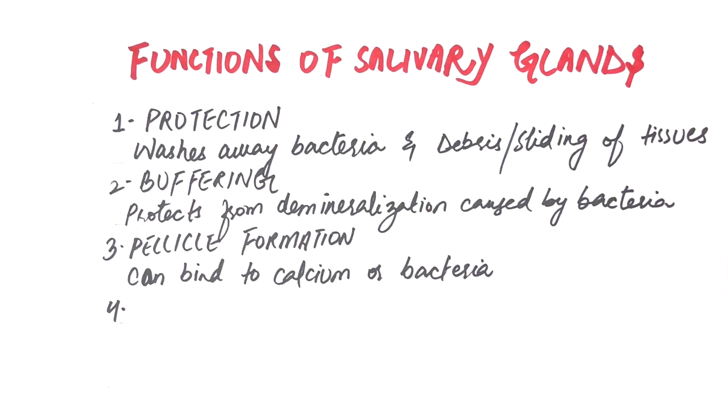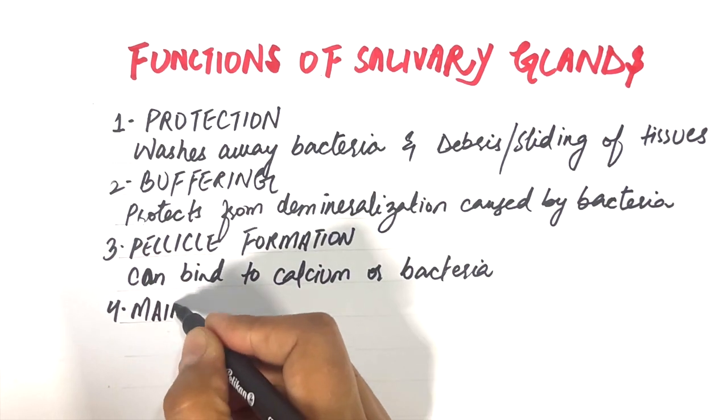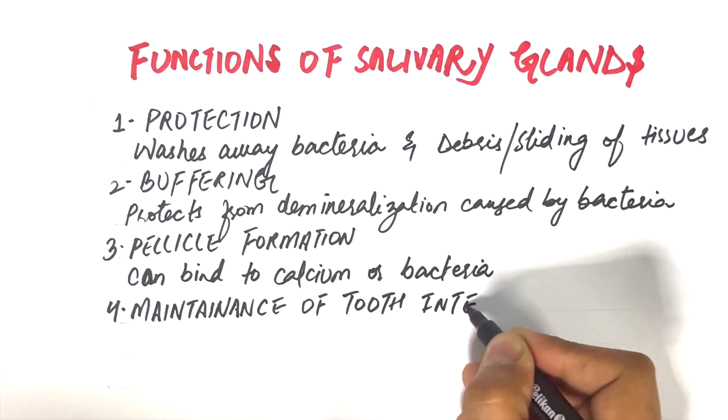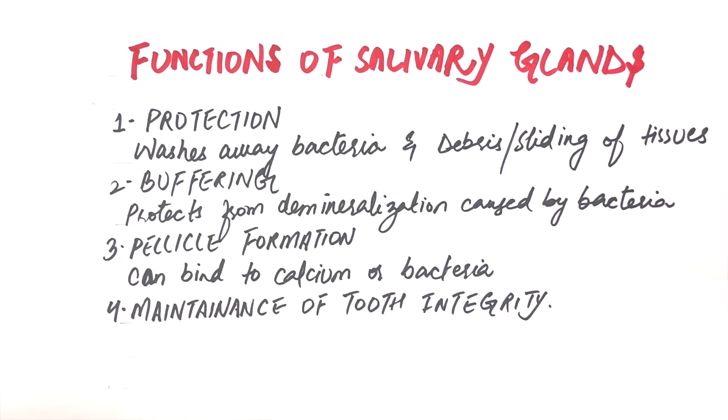Saliva is supersaturated with calcium and phosphate ions. The high concentration of calcium and phosphate results in further maturation of tooth enamel, thus increasing hardness and, most importantly, resistance to demineralization caused by cariogenic bacteria.